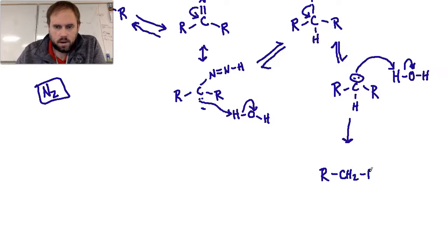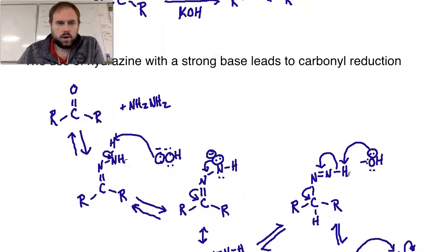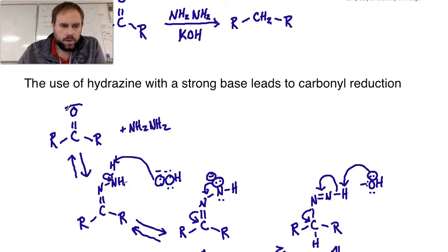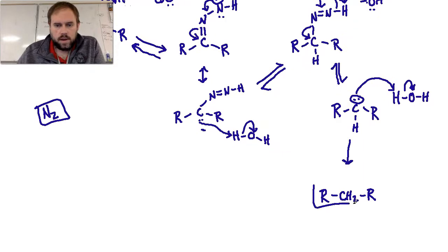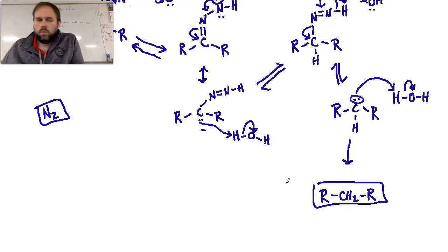This is a way of taking the carbonyl group and turning that group into an alkane. So that is the mechanism for the Wolff-Kishner.